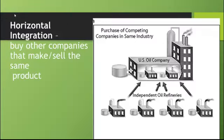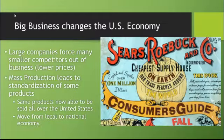Horizontal integration is when you buy other companies that make and sell the same product. As shown in the picture, this would be like a U.S. oil company buying up more oil companies to create one giant oil company. These big businesses changed the U.S. economy because large companies force out smaller competitors — the bigger you are, the lower your prices can be because of economies of scale. So a lot of large companies ran many of their smaller competitors out of business, and today you can still see that legacy where a few large companies dominate big parts of the American economy.